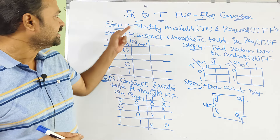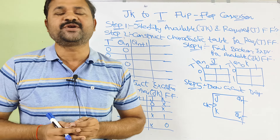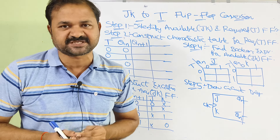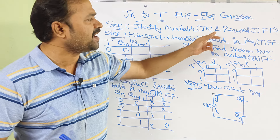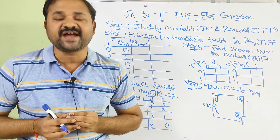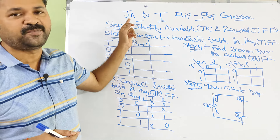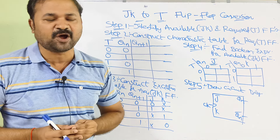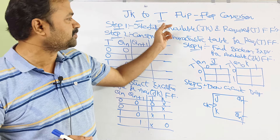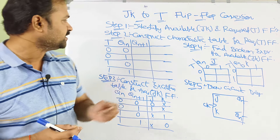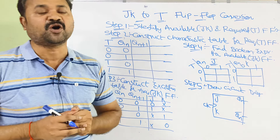Let us discuss JK to T flip-flop conversion. Here we have to follow 5 steps. Step 1: identify the available and the required flip-flops. The available flip-flop means the input flip-flop, that is the JK flip-flop. Whereas the required flip-flop means the output flip-flop, that is the T flip-flop.